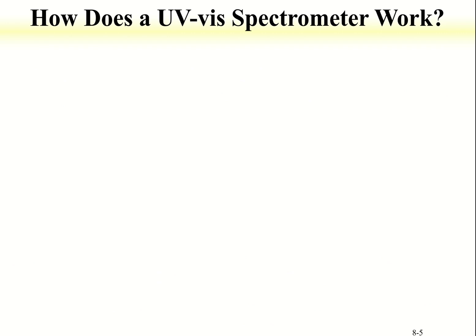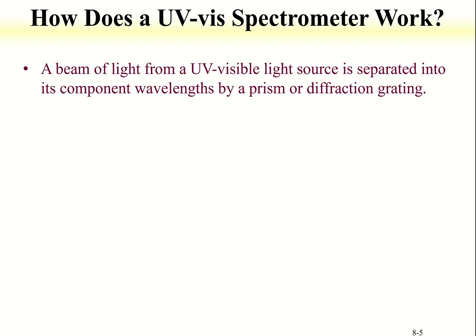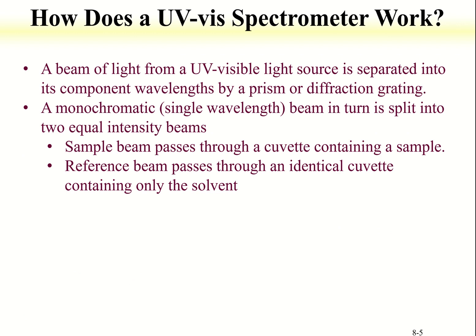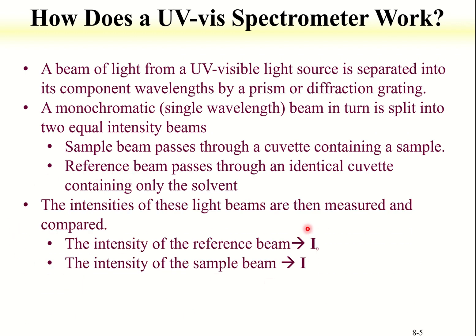In a UV spectrometer, a beam of visible light source is separated into its preset wavelength by a prism or diffraction grating. The monochromatic beam is then split into two beams of equal intensity. One beam is to pass through the cuvette which contains a sample. The other beam is to pass through another cuvette which contains only the solvent. The intensities of sample beam and reference beam are then measured and compared.